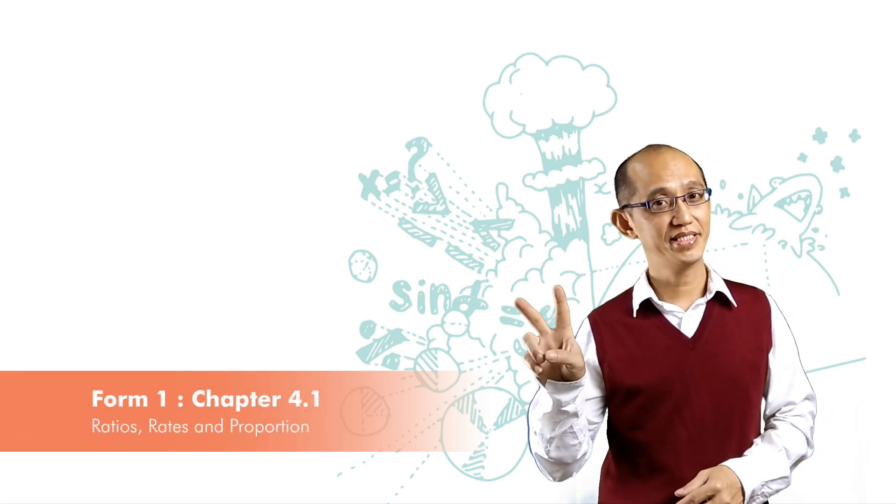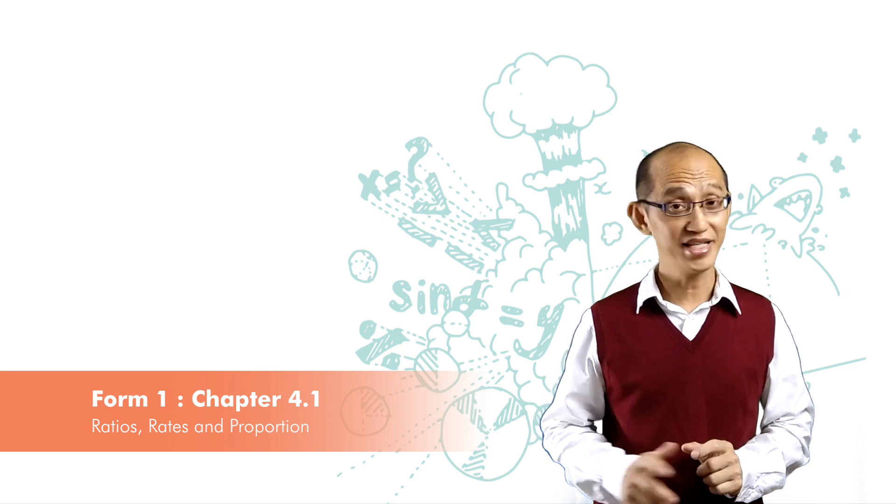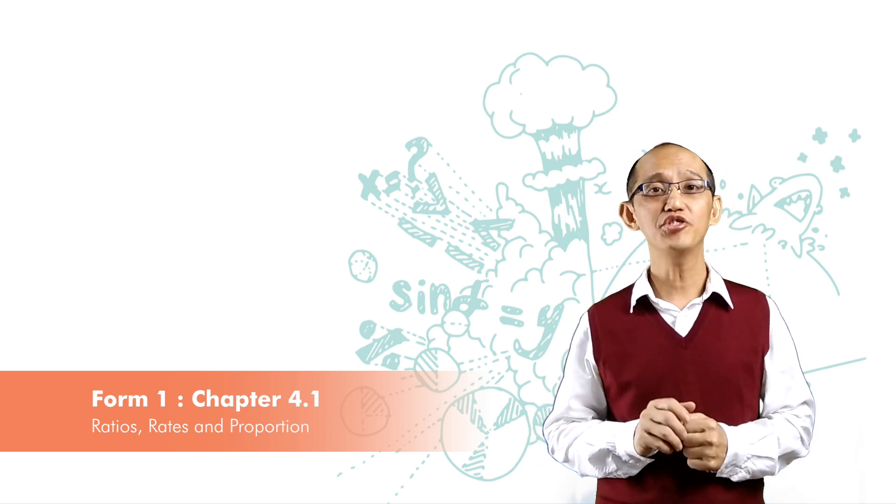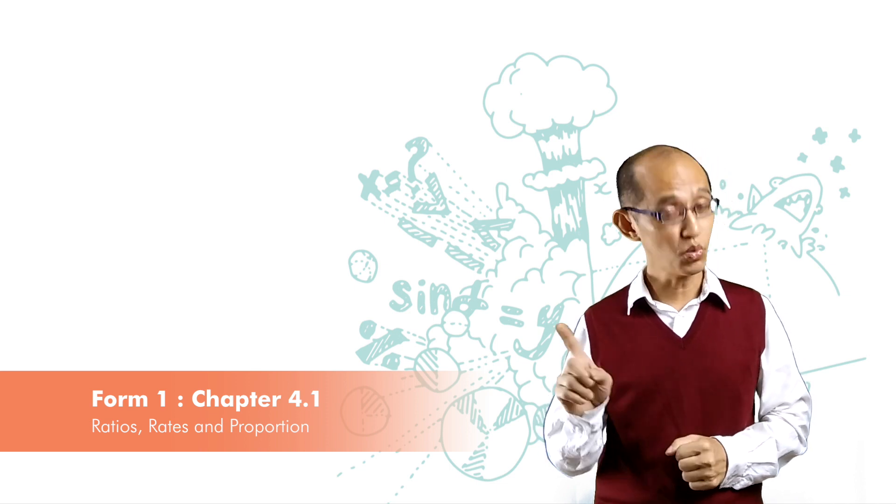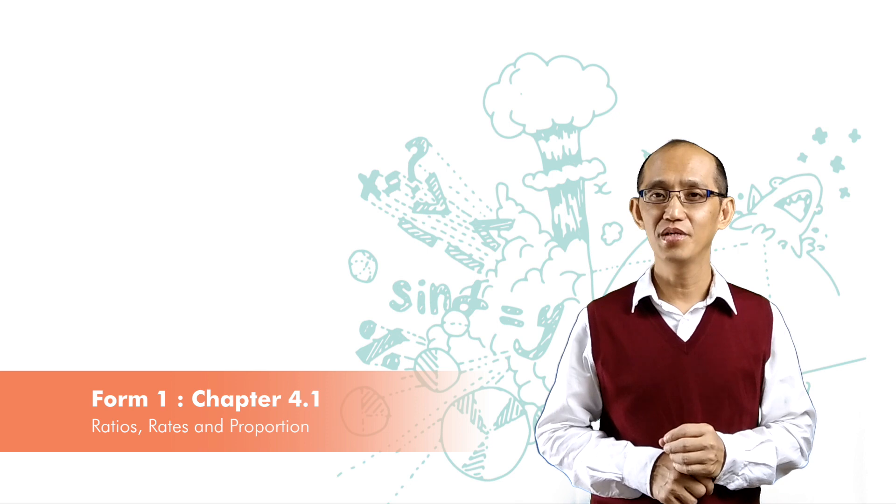If we are given two numbers, say there are 12 boys and 18 girls in a class, we can actually write a few ratios out from there, not just one. If that sounds not right to you, let's look at this example.